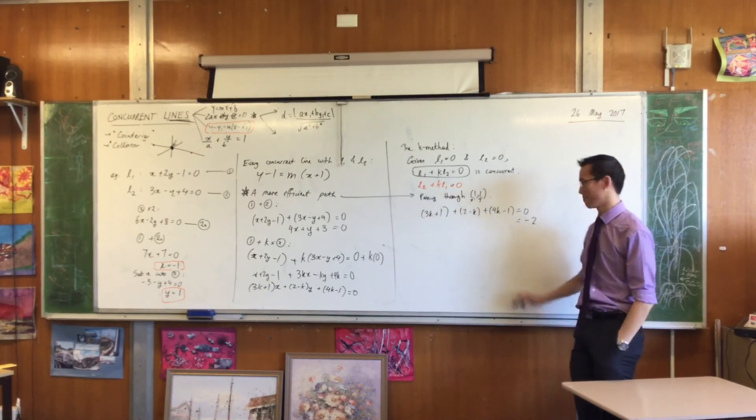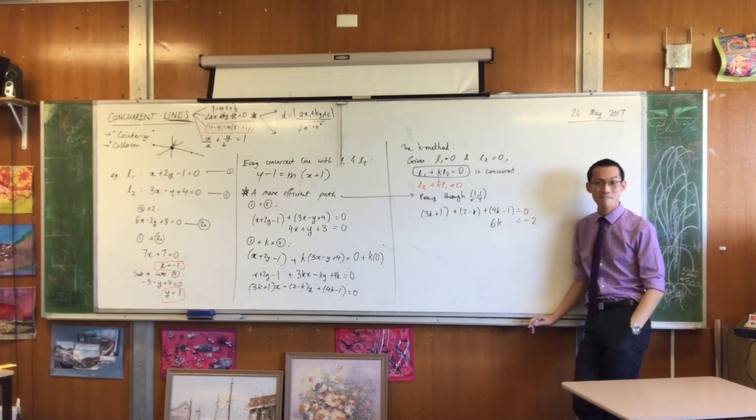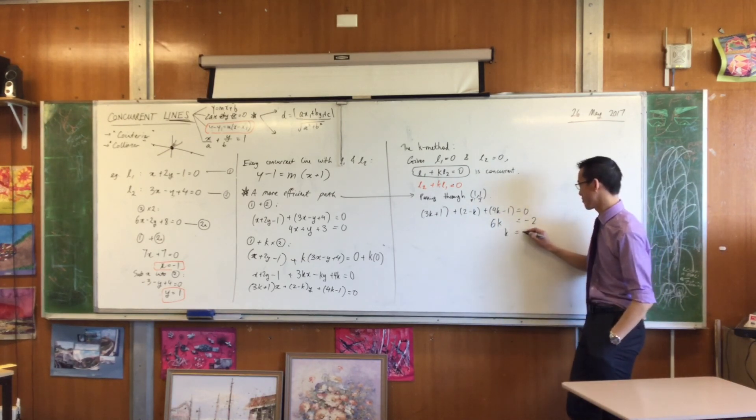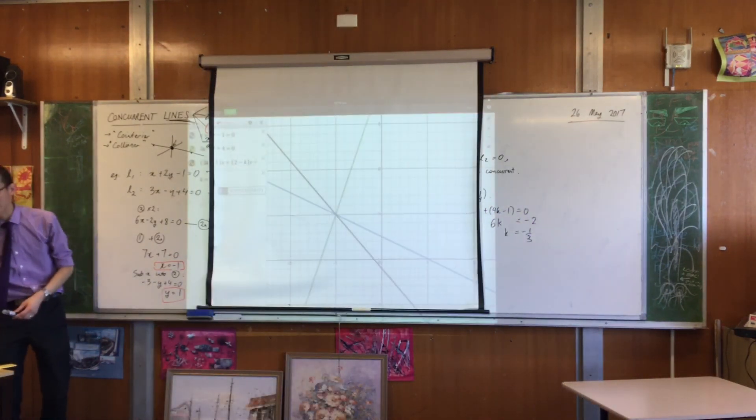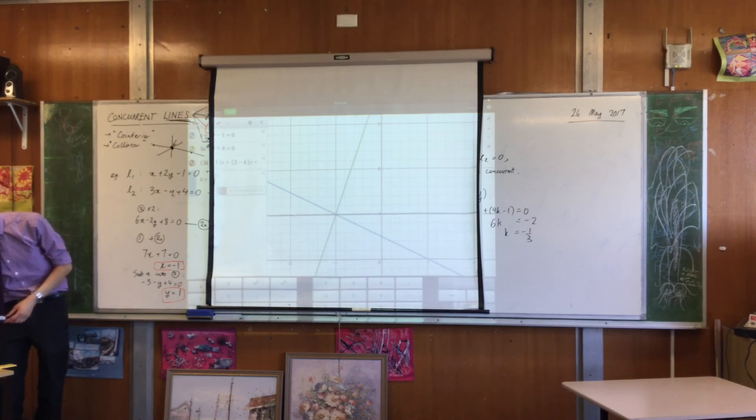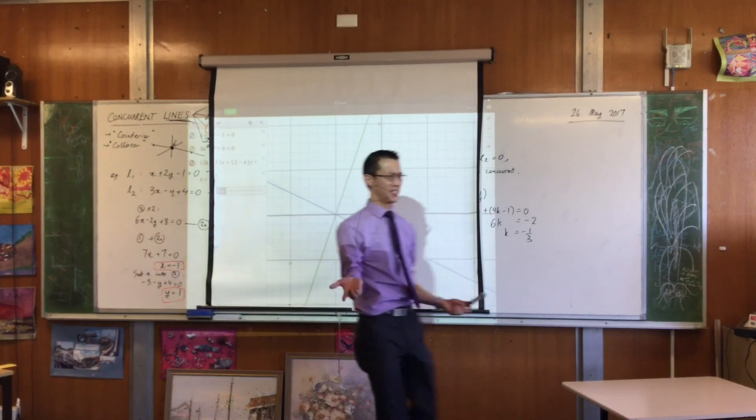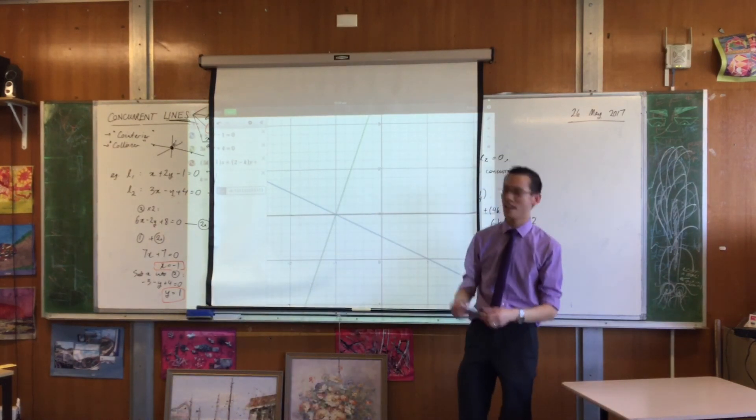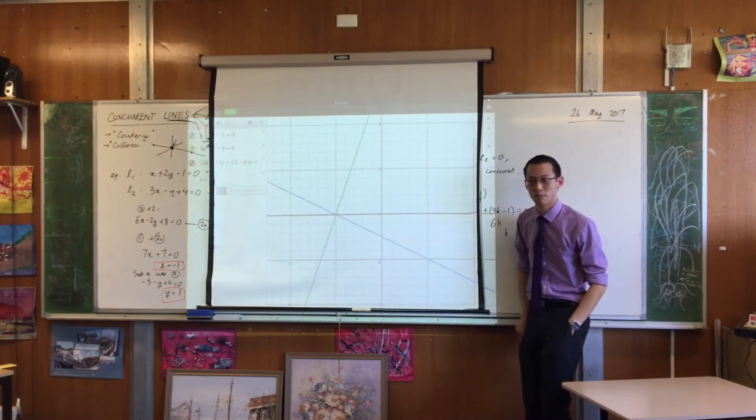Now tell me how many k's there are. Six. Good. So what's k? Negative one third. Okay, let's have a look. Wait, isn't k negative a third? It's negative a third, right? Negative a third. Yeah. Huh. Of course it is, isn't it? What was that point of intersection we found earlier? It's negative one, one. So you have to be horizontal to get through. Are you happy?